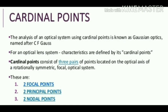Cardinal points are points located on the principal axis of a rotationally symmetric optical system. Scientist C. F. Gauss gave these points in the year 1841, so they are also called Gaussian points, and this field is called Gaussian optics. For a thick lens, we use cardinal points to find the size of the image, size of the object, and the distance of the object and image from the focal point. There are three pairs of cardinal points: two focal points, two principal points, and two nodal points — all of which we will see in the next class.